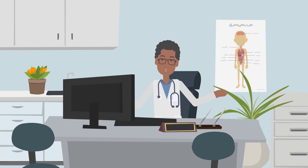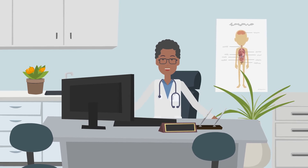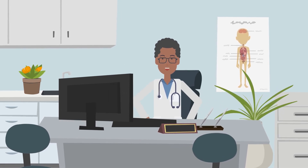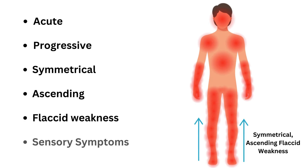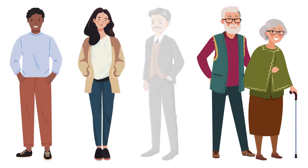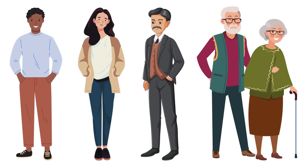Guillain-Barré syndrome is an acute inflammatory polyneuropathy that affects the peripheral nervous system. It causes an acute, progressive, symmetrical, ascending flaccid weakness and can also cause sensory symptoms. It is a rare but potentially fatal autoimmune disorder. It may affect anyone but occurs more commonly in early adulthood and in the elderly, and is generally more common in males than females.